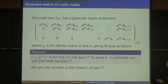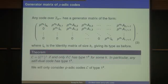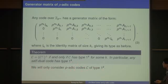Any code over the p-adic integers has a generator matrix equivalent to a standard form, very similar to the case of Z/p^e. But something is different from the finite case: C-perp-perp is not always equal to C. This only holds for type 1^K, meaning all diagonal entries are 1. In particular, self-dual codes satisfy this, so any self-dual code has type 1^K. Therefore, we will only consider p-adic codes of type 1^K, since I am interested in self-dual codes.